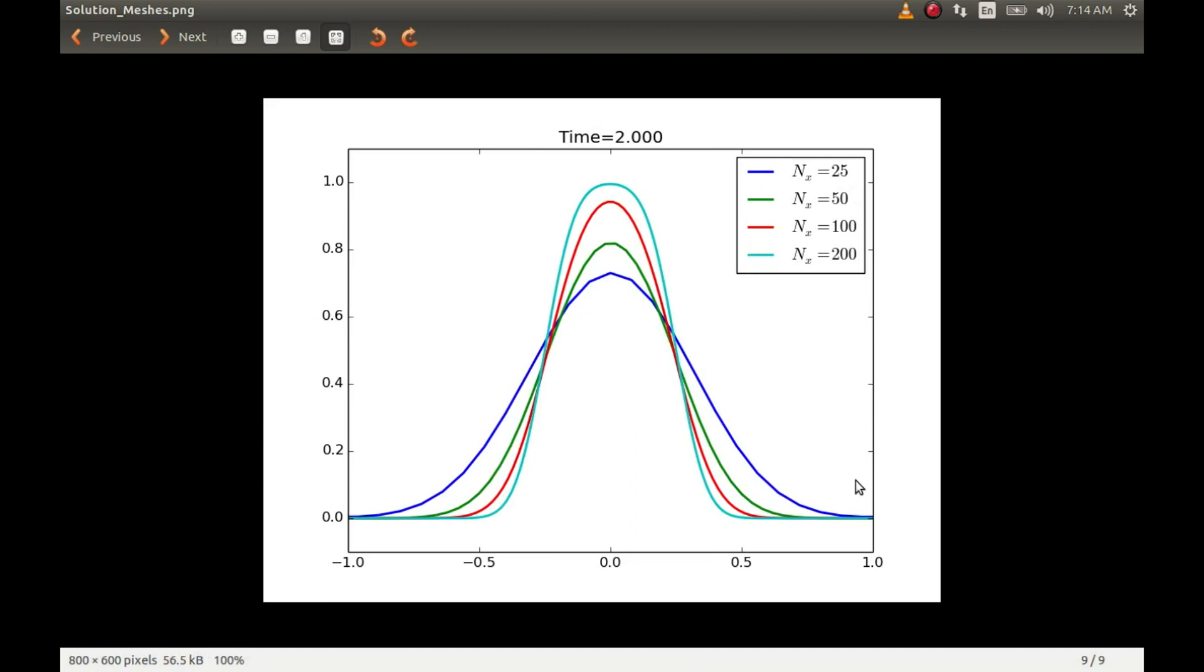So we can also improve the accuracy by increasing the mesh size. So if I keep increasing the number of cells going from 25 cells to 200 cells, then we can see that the error keeps reducing. This blue line is pertaining to number of cells equal to 25 and this cyan line corresponds to the number of cells equal to 200. We can clearly see that the cyan line is more like a square wave. Obviously it's not a square wave but it's more close to the square wave which is the expected result compared to this blue line.